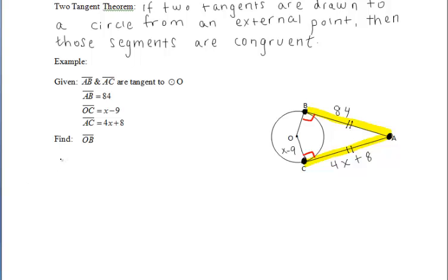And solve that to get that X has a value of 19. But since we want to find OB in the end, we should recognize that OC and OB are radii of the circle, so they're congruent. So we can substitute 19 in for X to get a final answer of 10.